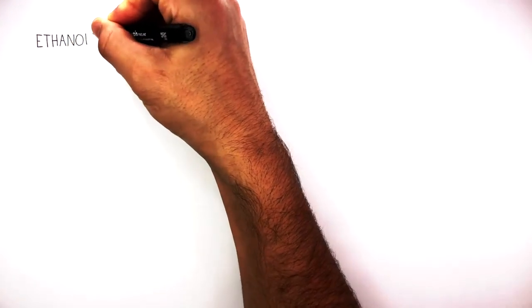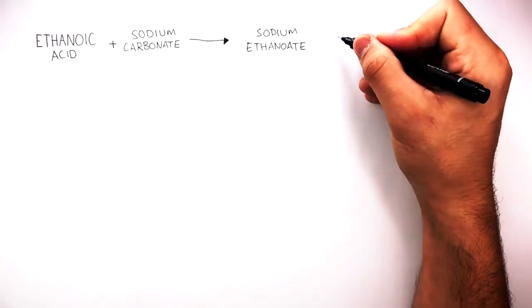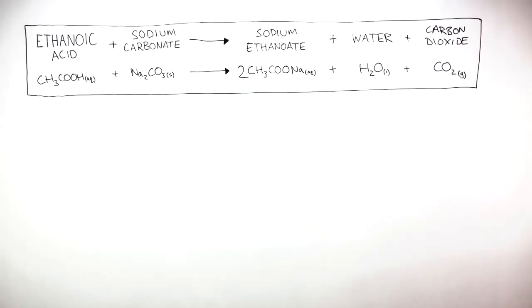So when ethanoic acid reacts with sodium carbonate, sodium ethanoate, water, and carbon dioxide are formed. And this is the balanced symbol equation.